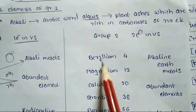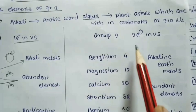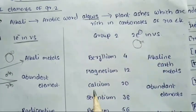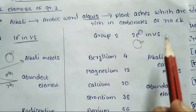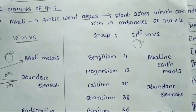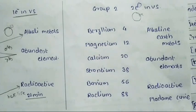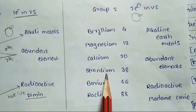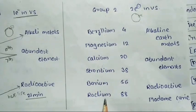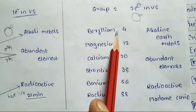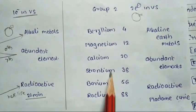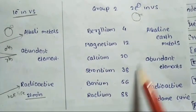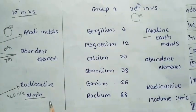Group number 2 includes beryllium, magnesium, calcium, strontium, barium, and radium, with atomic numbers 4, 12, 20, 38, 56, and 88. All these elements are called alkaline earth metals.